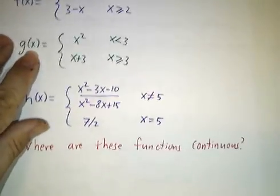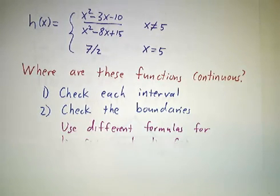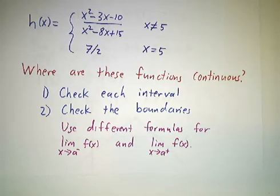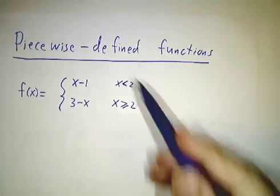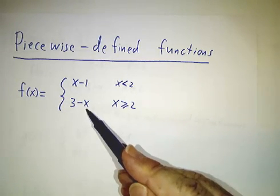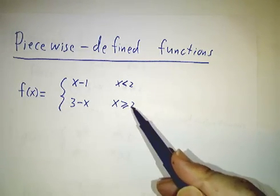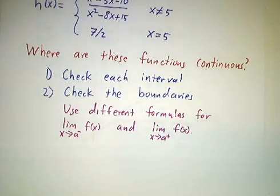So for each of these functions, we want to know where the function is continuous. And a strategy is we check it in each interval of definition. For x less than 2, you use this definition. For x bigger than 2, you use this definition. But you have to be careful about what happens at x equals 2. You check the boundaries separately.